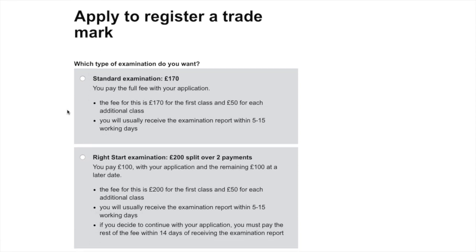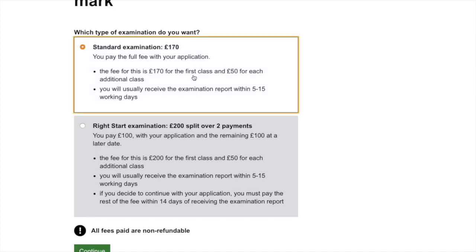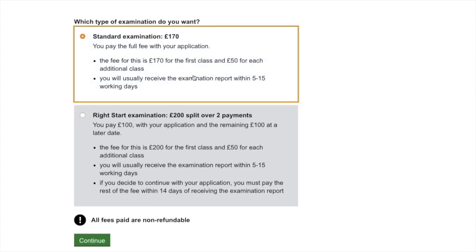Now this is the application type decision: standard examination or Right Start examination. The Right Start has the benefit of someone examining your application, but takes about two weeks more and costs an extra £30 — split over two payments and non-refundable. If you pay £100 and they say it doesn't meet the rules, you've either lost that money or need to resubmit. I would always just go with the standard examination — it's faster and £30 less. It's a no-brainer for me.